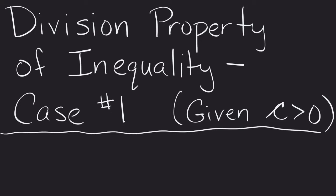Division property of inequality actually has two cases that we need to look at. Case one is where we're given the value of c being greater than zero. So it works very similar to the division property of equality, only now we have an inequality which is going to kind of tweak our signs a little bit.